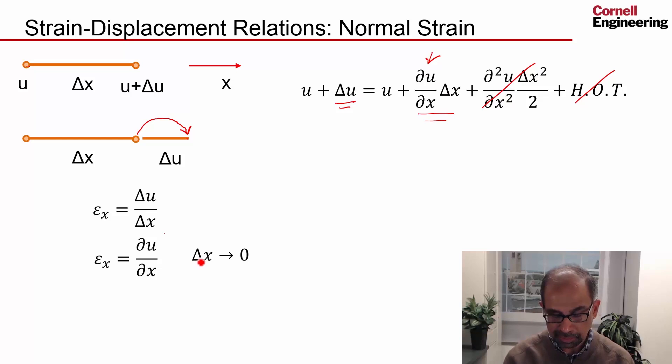So in the limit as Δx tends to zero, the normal strain is that gradient - the gradient of the displacement in the x direction, particularly εₓ = ∂u/∂x.